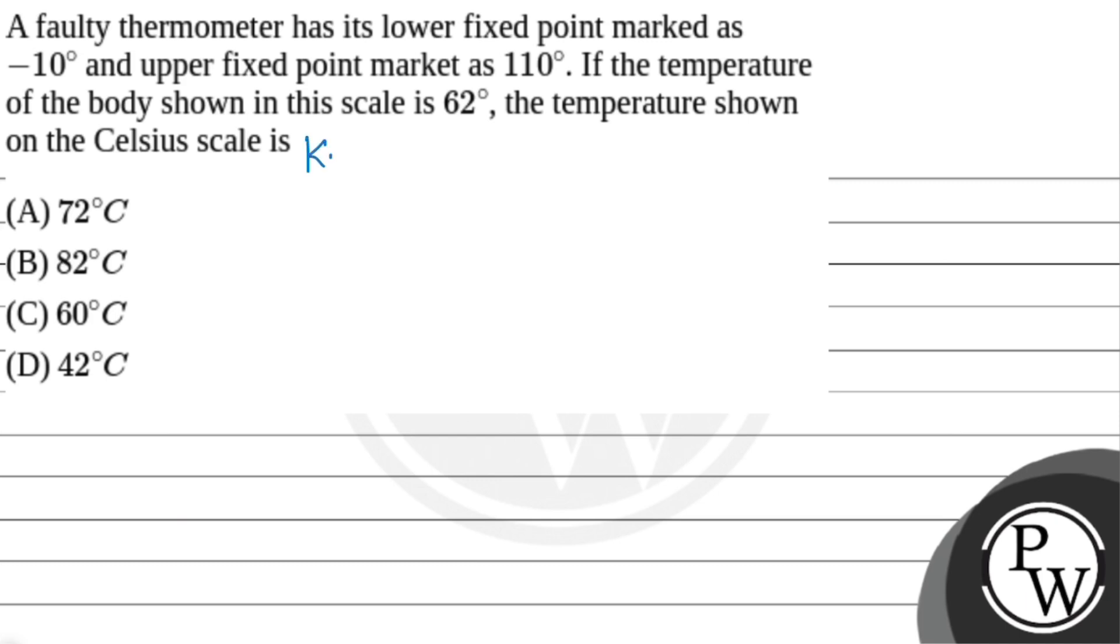Let's see the key concept involved here. The key concept is the relation between an unknown thermometer or faulty thermometer with a thermometer in degree Celsius scale. So that will be the temperature shown in unknown thermometer minus lower point upon upper point minus lower point.